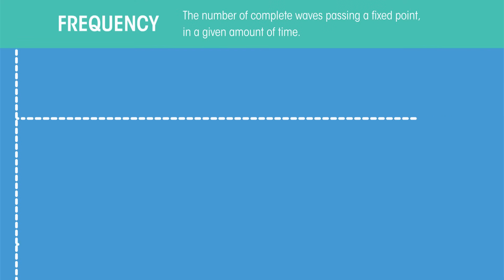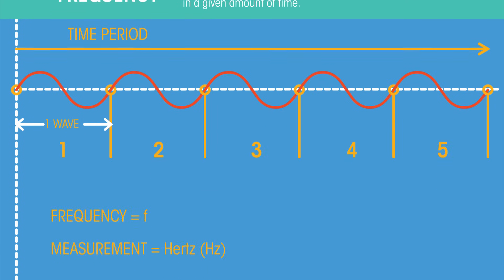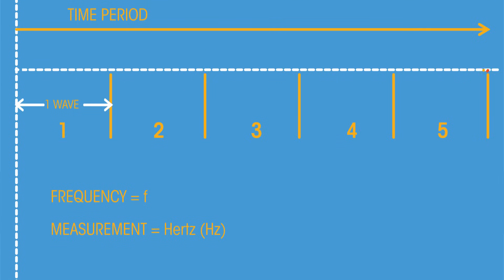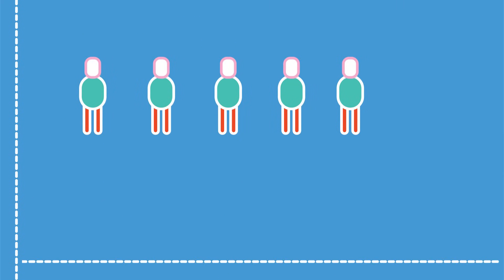The frequency of a wave is the number of complete waves passing a fixed point in a given amount of time. This time period is usually one second. This is what one complete wave looks like. So if this was our time period, the frequency would be five. Frequency is given the symbol F and is measured in units called Hertz. Hertz measure how many complete cycles per second, so how many people in our Mexican wave stand up every second.